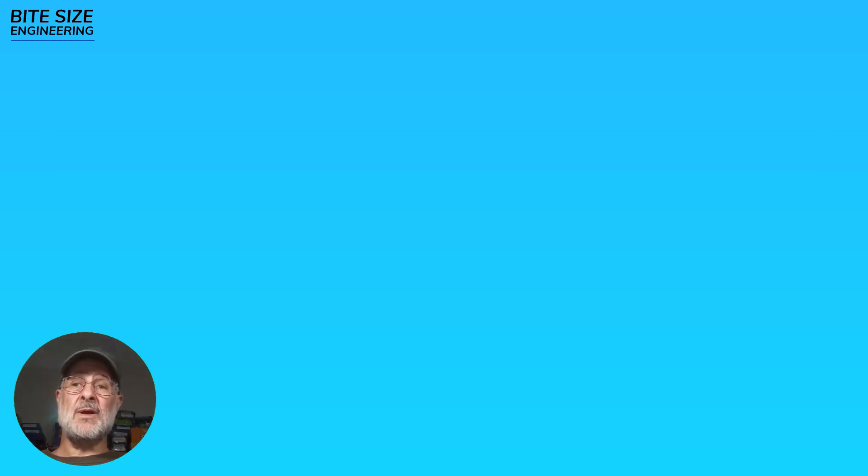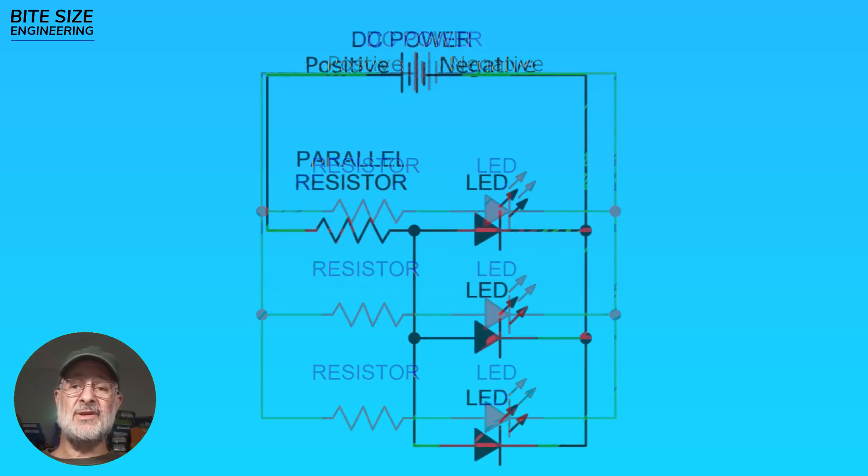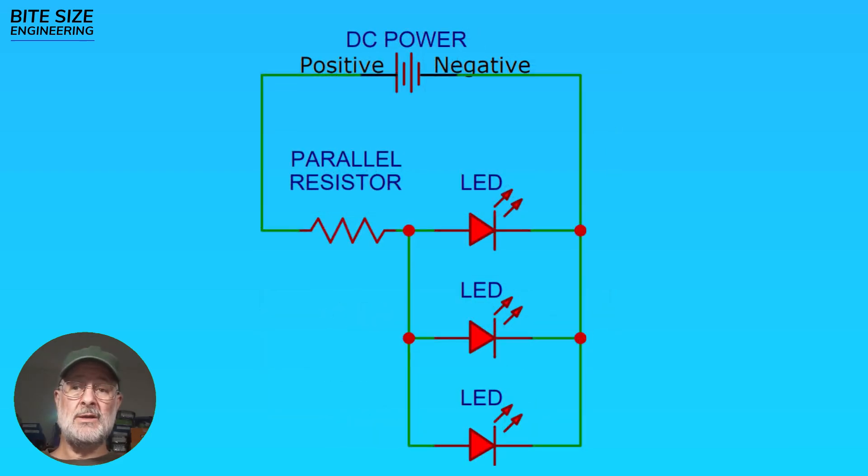Now, back on the parallel, if we look at that again, we've got a resistor for every single LED. If we were to combine the resistors into one, we could simplify the circuit.